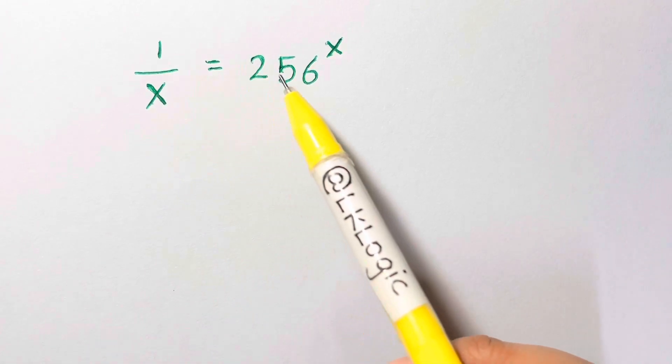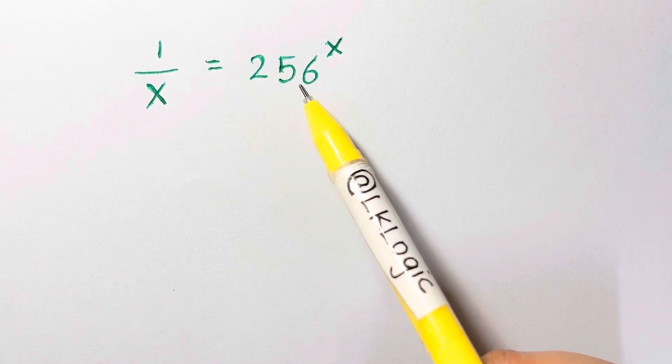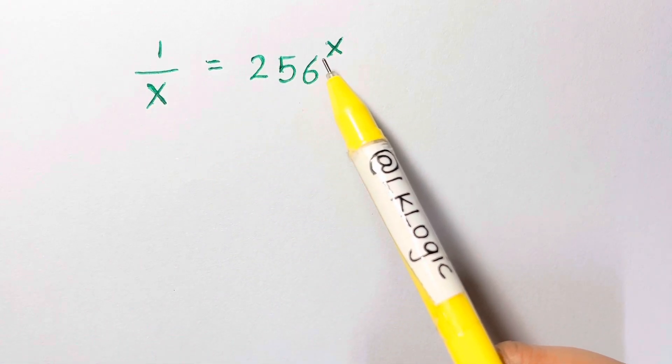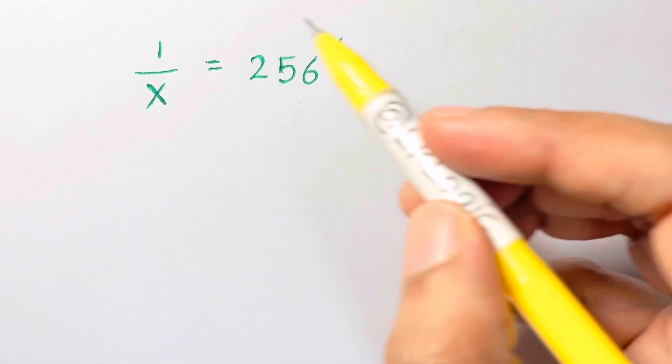Hi guys, I have a very nice exponential question for you all which is 1 over x equals 256 raised to x, and you have to find the value of x. So how can we do that? What I'm going to do is eliminate this x and how can we eliminate this x? I'll show you.